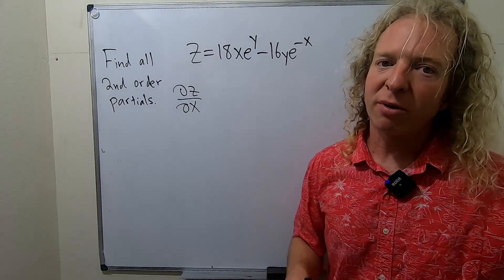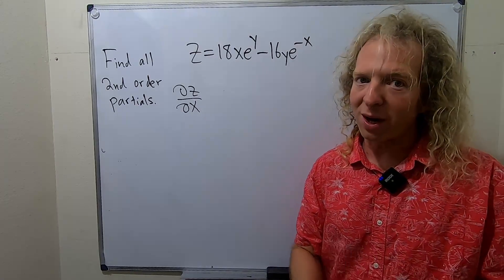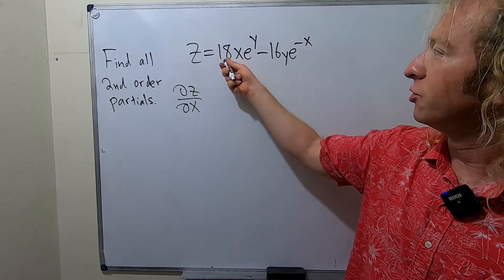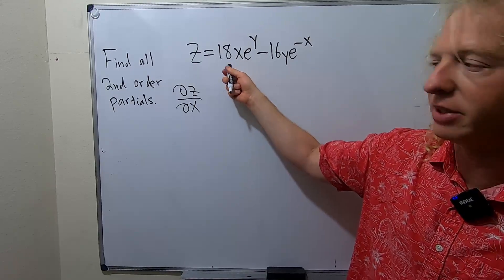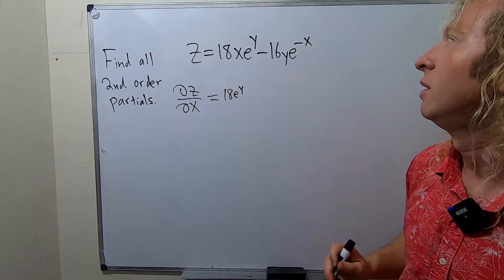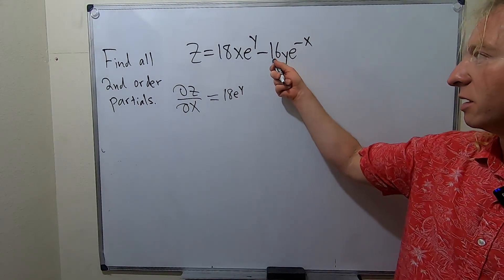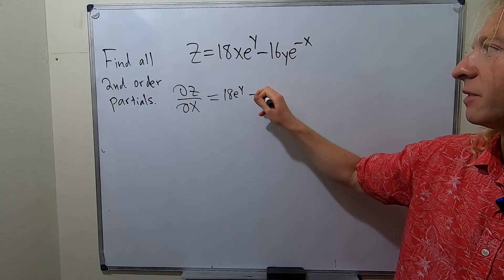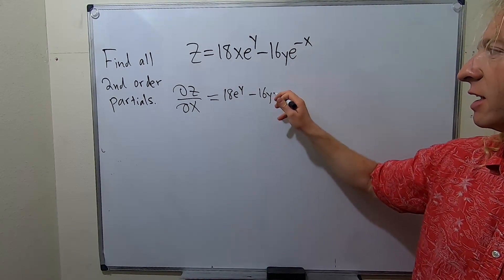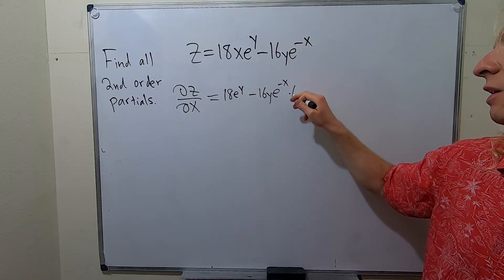When we're finding the partial derivative of z with respect to x, we have to treat all of the y's as constants. So e to the y is a constant. The derivative of 18x is 18, and we're left with e to the y. Taking the partial with respect to x, that constant hangs out. The derivative of e to the negative x is e to the negative x times the derivative of the inside by chain rule, which is negative 1.